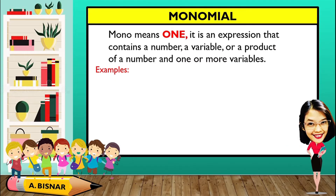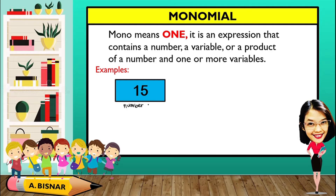Let us start with monomial. Mono means one. It is an expression that contains a number, a variable, or a product of a number and one or more variables. For example, 15 — 15 is a number or a constant, which means all numbers and constants are considered as monomial.